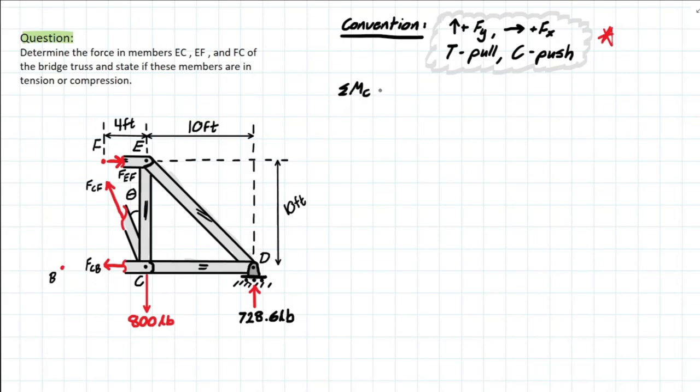We'll take the moment at C equal to zero, and we'll take our convention again, and we will go ahead and solve as normal.